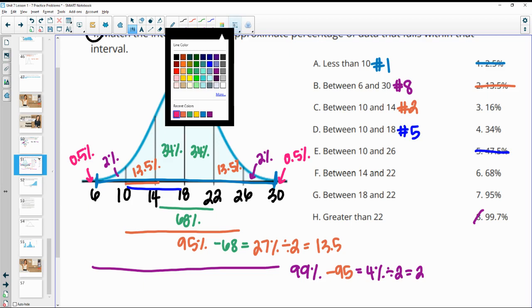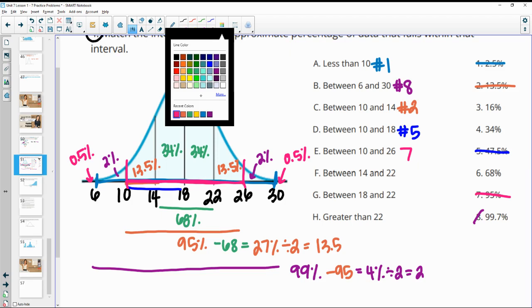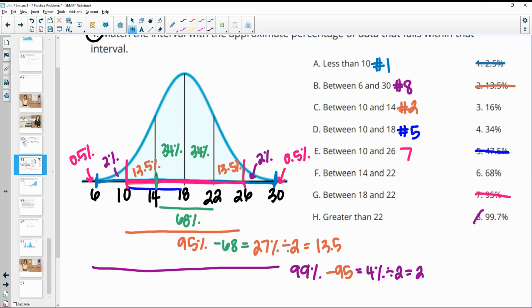Between 10 and 26. So 10 to 26 is this interval, which is just within your two standard deviations. So that's 95% of the data. Then between 14 and 22. So 14 and 22 is right here. That's one standard deviation on either side. So that's 68%, which is number 6. Between 18 and 22 is just this 34%. And then more than 22. So more than 22 would be this end. So adding 13.5 plus 2 plus 0.5. So that's going to be about 16%. So that's number 3.